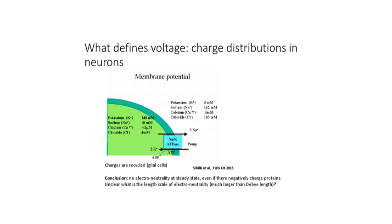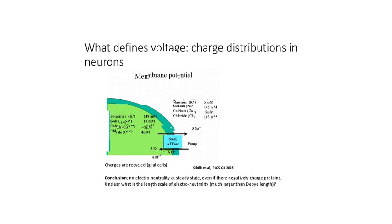Let me remind you the context and background. What defines the voltage in a neuron? The charge distribution in a neuronal cell at equilibrium is defined by the difference of concentration between the ions outside — potassium, sodium, calcium, and chloride — and the same amount of ions inside. The exact regulation is due to pumps and transporters. What is striking from these numbers is that the charge balance between positive and negative charges shows more positive charge than negative charge both inside and outside.